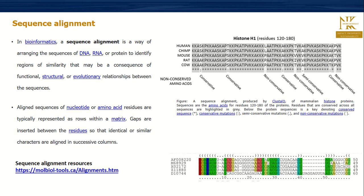In this figure shown here, when you compare the protein sequences of histone between human, chimps, mouse, rat, and cow, you can see the evolutionary relationship between these different histone sequences from different organisms. You can see the regions that are conserved, regions that are non-conserved, and regions that are semi-conserved. It is very important to know how to align sequences and understand the algorithm behind alignment tools.